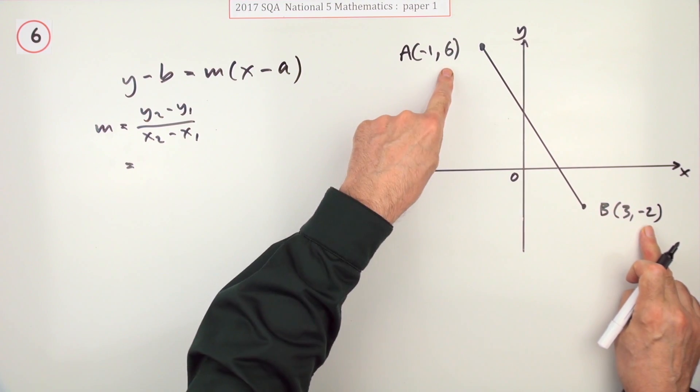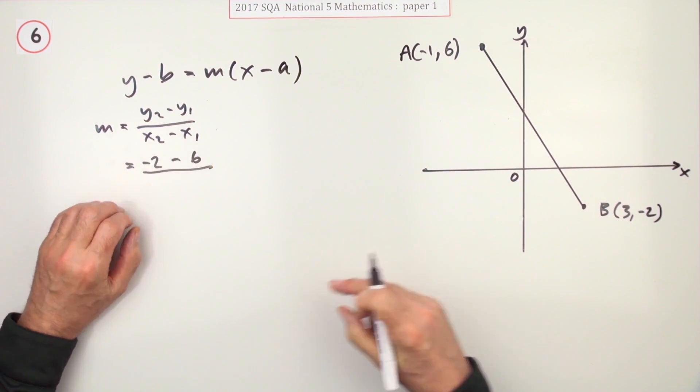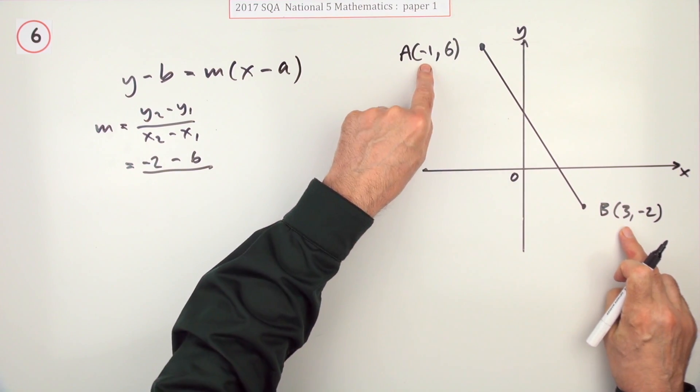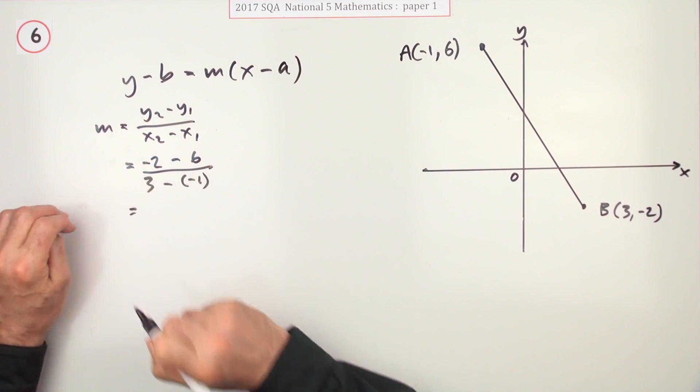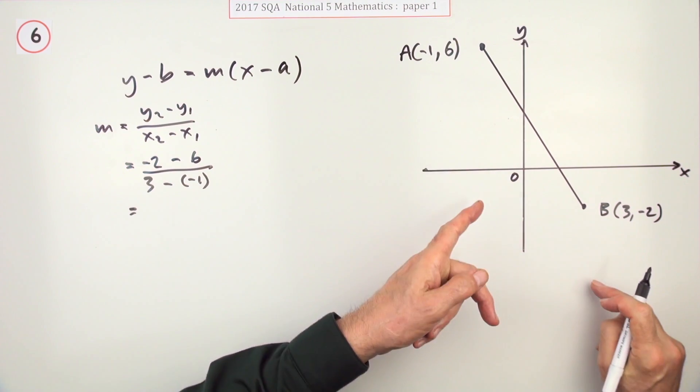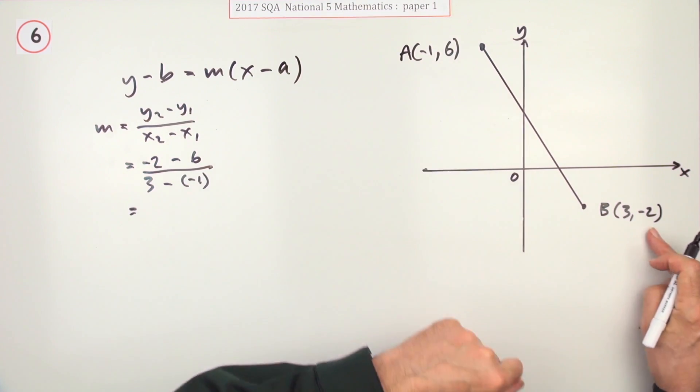So y₂ minus y₁ is negative 2 take away 6. x₂ minus x₁ is 3 take away negative 1.